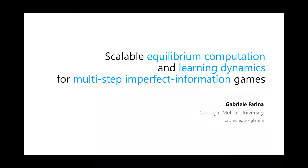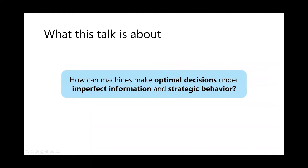Keep in mind this will not be about video games, just in case the first slide is misleading. Fundamentally in this talk I'll try to tell you about efforts into trying to solve the question: how can machines make optimal decisions under imperfect information and strategic behavior?